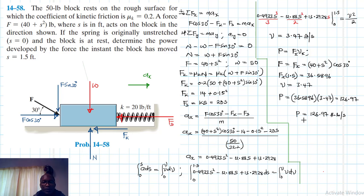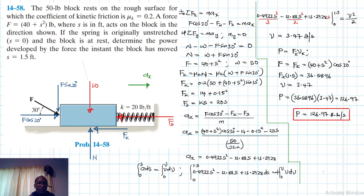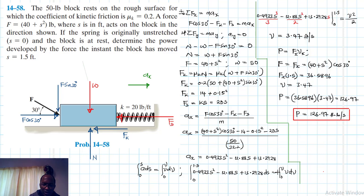We are done. The power developed by the force the instant the block has moved 1.5 feet is 126.97 ft·lb/s. I hope this video was helpful — if it was, give it a thumbs up, keep subscribing and liking the channel, and I'll see you in my next screencast.